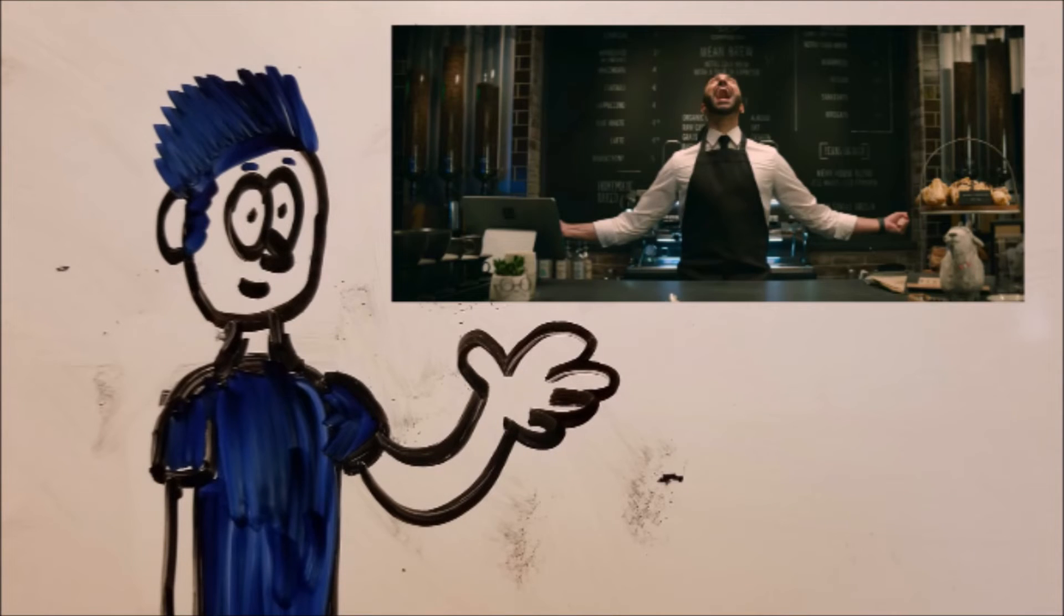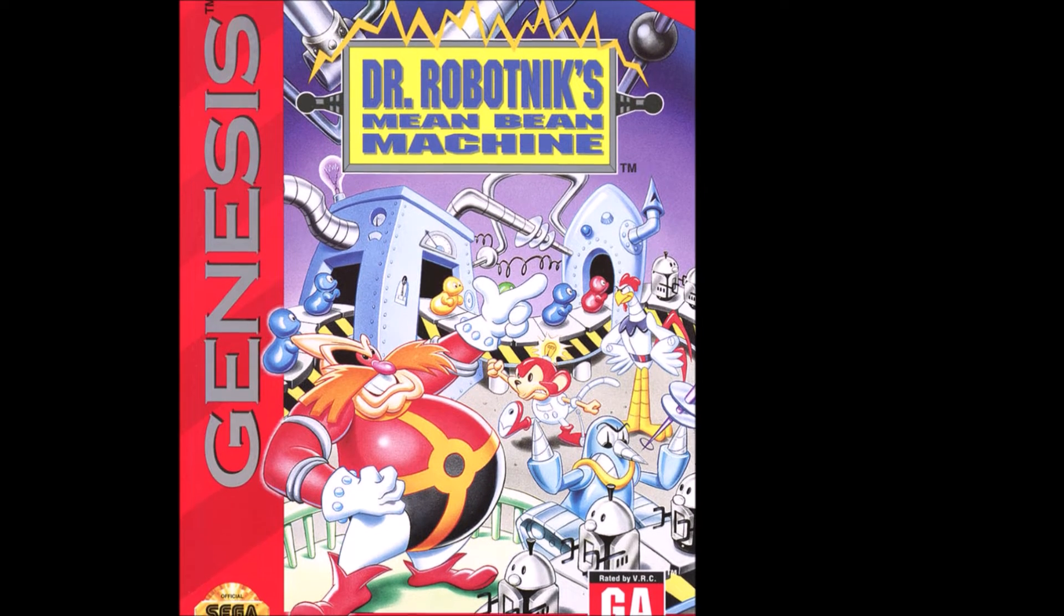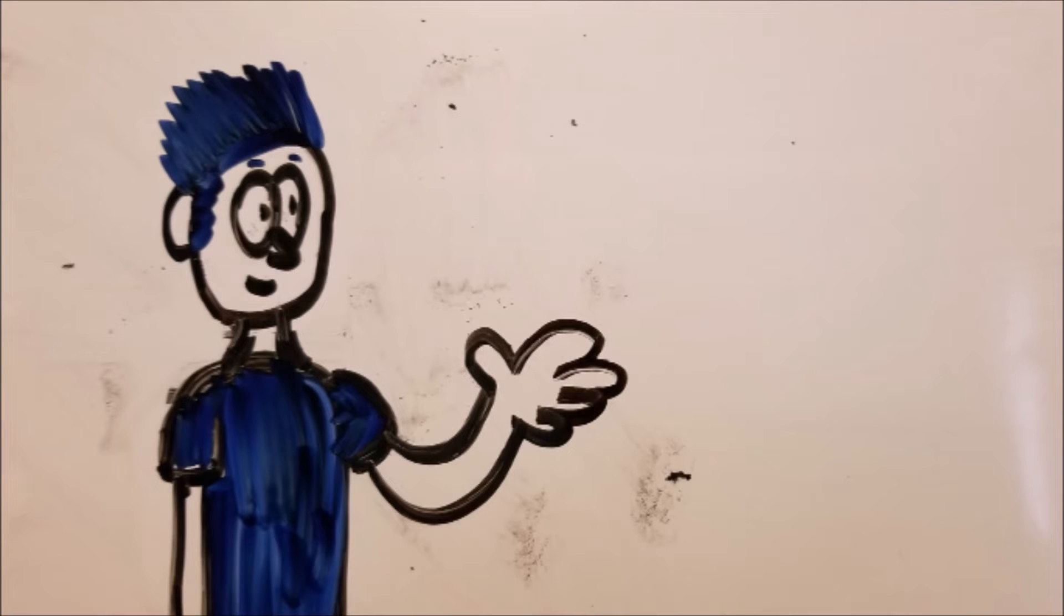But one of the first things he does when he arrives to Green Hill Zone is to go after his partner Agent Stone who you might remember from the first film who now works at a latte shop called The Mean Bean. Now the name is a reference to the spin-off game Robotnik's Mean Bean Machine which is a pretty cool easter egg.